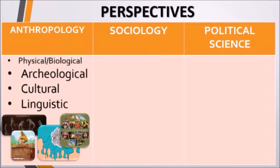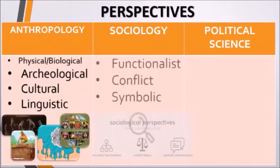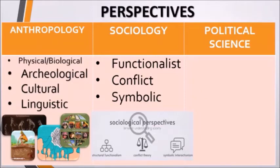We also have three major perspectives under sociology. First is the functionalist perspective, which was popularized by Emil Durkheim. This perspective views society as a complex whole composed of groups working together to achieve stability. Society is composed of social institutions such as the church, economy, government, school, and family.